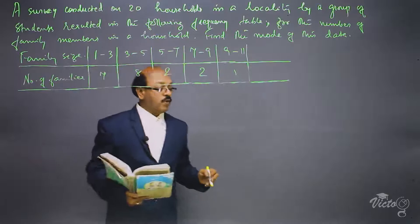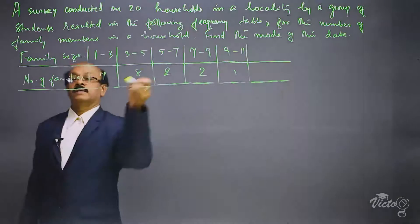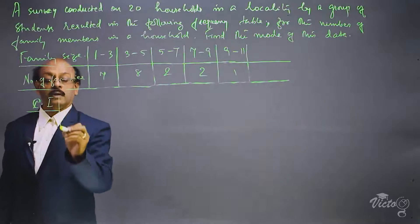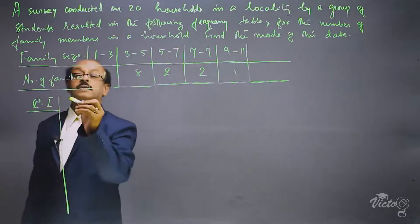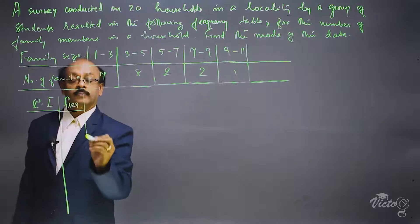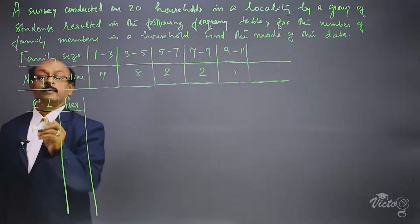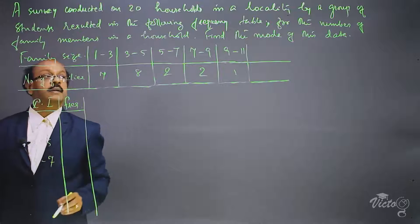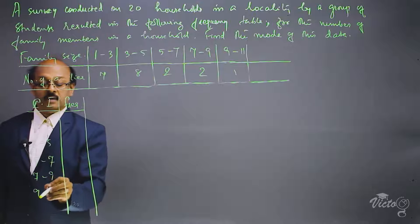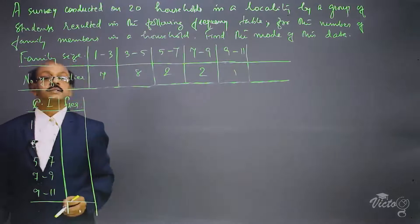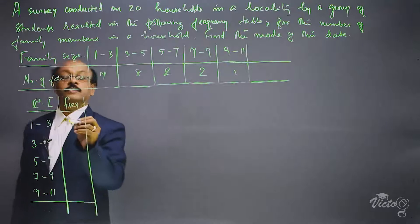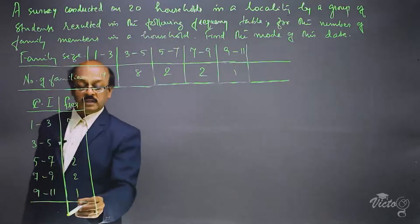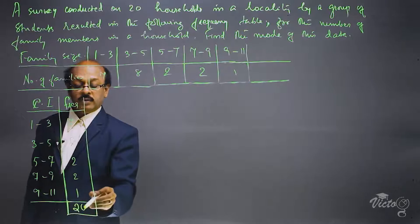Now we are going to find the mode of the given data. The class intervals are 1–3, 3–5, 5–7, 7–9, and 9–11, with corresponding frequencies 7, 8, 2, 2, and 1. The total is 20, as also given in the question.